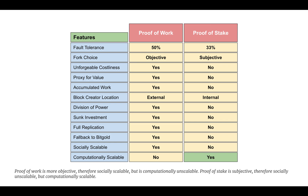Fork choice is the decision rule network participants use when presented with more than one chain — when it splits, when they join for the first time, or when they leave and rejoin. As an external physical signal, proof of work enables a clear, objective fork choice in the form of the longest proof of work chain. It is objective because only with the computing power of the whole network can the longest chain be established. Proof of stake systems lack such an objective quantity, so they must use a subjective decision-making process, consulting off-chain with block explorers, developers, or other sources to decide which chain to follow.